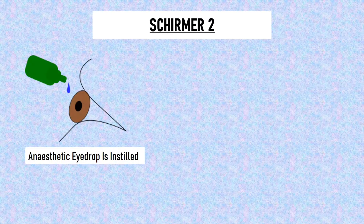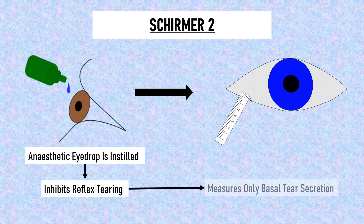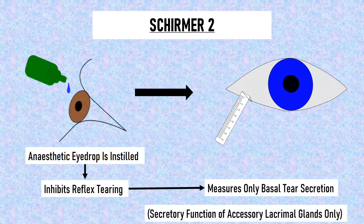Schirmer 1 measures basal as well as reflex tear secretion. In Schirmer 2, an anesthetic eye drop is instilled first, and then the Schirmer strip is placed. The anesthetic eye drop inhibits reflex tearing, and thus Schirmer 2 measures only basal tear secretion. Since accessory lacrimal glands are responsible for basal tearing, Schirmer 2 represents the secretory function of only the accessory lacrimal glands, not the main lacrimal gland.